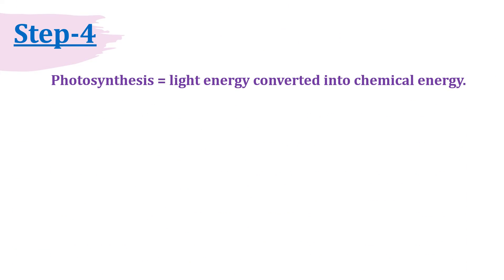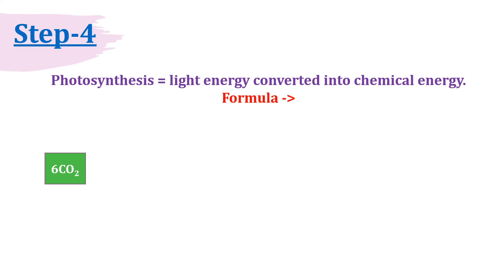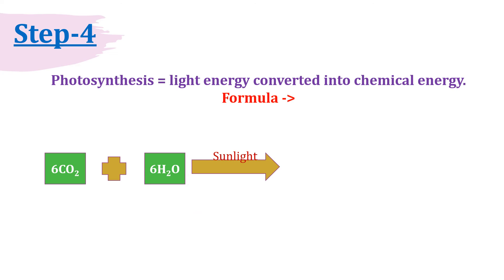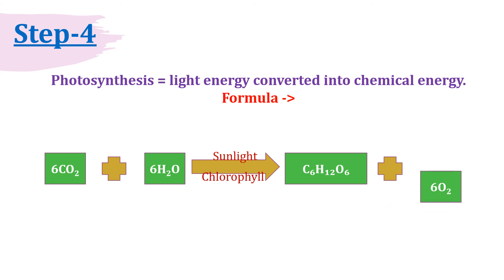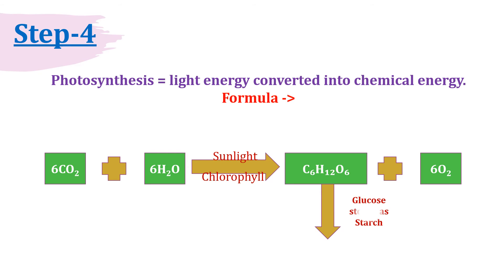Photosynthesis is the conversion of light energy into chemical energy. The plant takes carbon dioxide from the atmosphere plus water, and using sunlight and chlorophyll, gives out glucose (C6H12O6) plus oxygen. By taking carbon dioxide and water, with the help of sunlight and chlorophyll, the plant gives out glucose and oxygen. This glucose is then stored as starch.